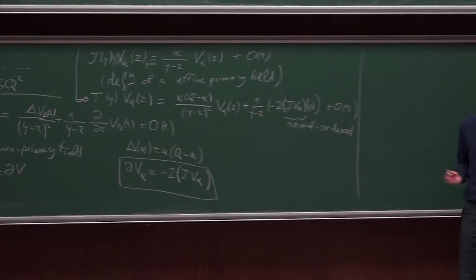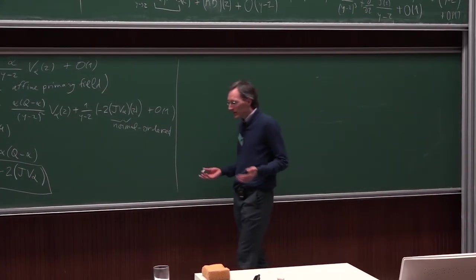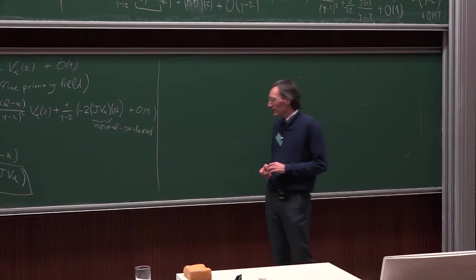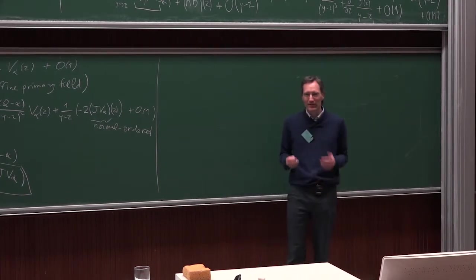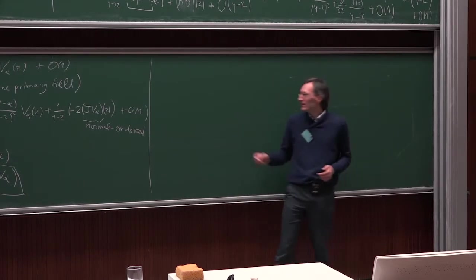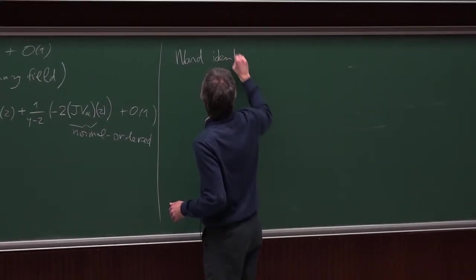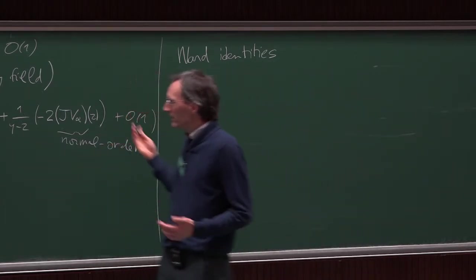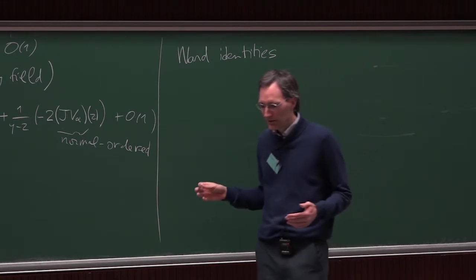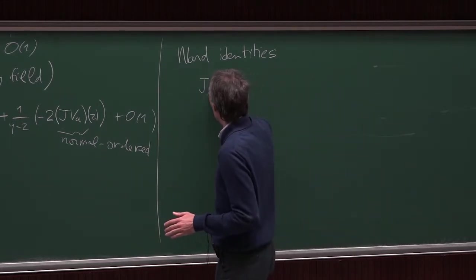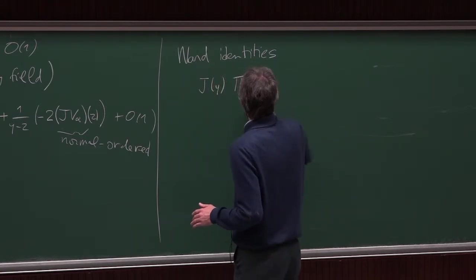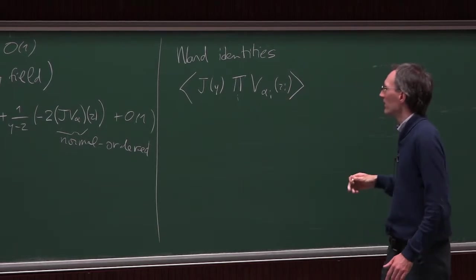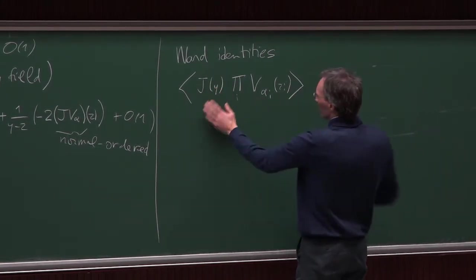Solving the free boson means computing correlation functions of affine primary fields. To do this, we compute Ward identities. Proceeding as in the Virasoro case, we insert the current J into the correlation function of primary fields: ⟨J(y) ∏ᵢ Vαᵢ(zᵢ)⟩. This auxiliary object is determined by its poles, residues, and behavior at infinity.